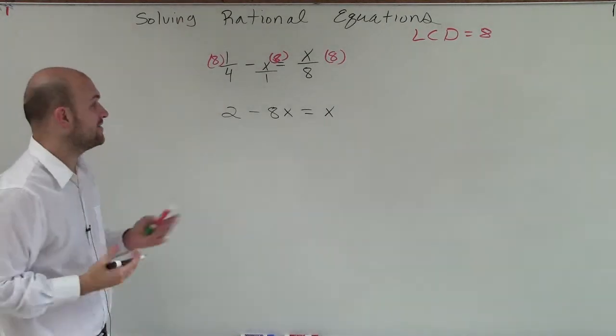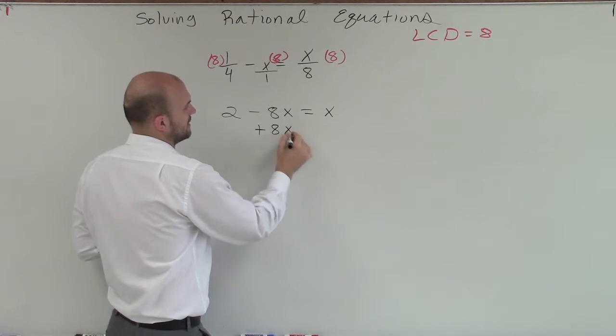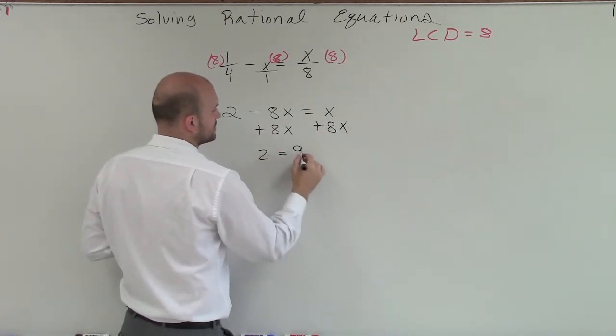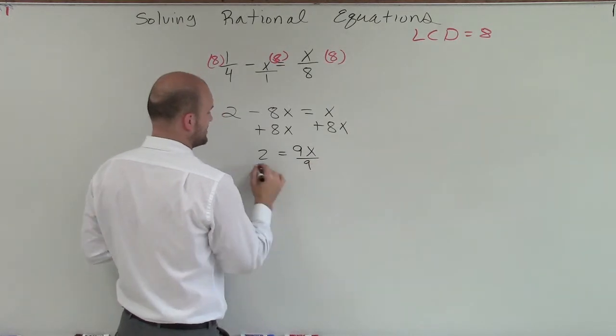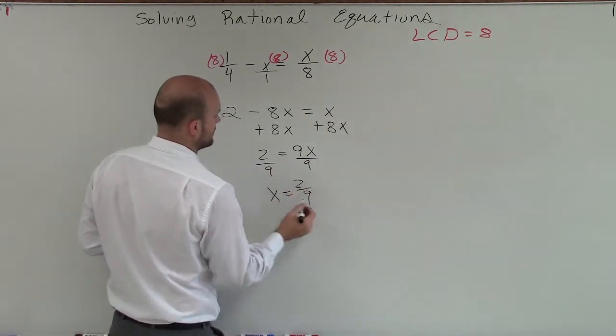Now, I just simply get my variable on the same side. So now I'll just add 8x. Now I have 2 equals 9x. Divide by 9. Now I get x equals 2 ninths.